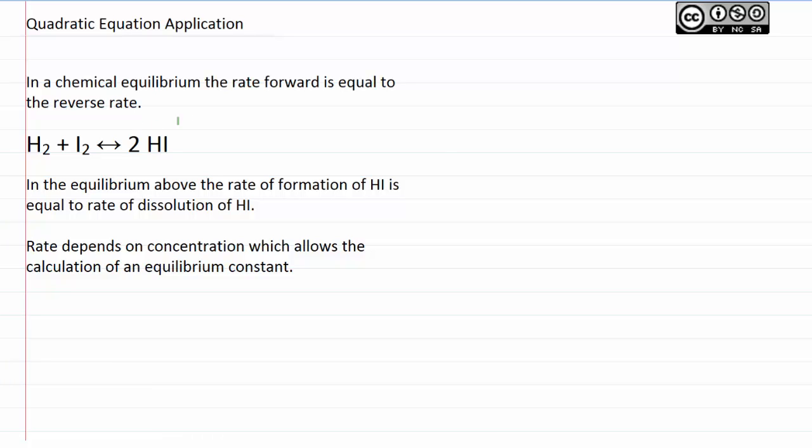In an equilibrium you have a chemical reaction that's going both forward and backwards at the same time, and so we're seeing both the formation and the destruction of HI in this chemical equilibrium. The rate forward is equal to the rate in reverse. In other words, HI is being formed at the same rate as it's being destroyed at equilibrium, so you have a stable concentration.